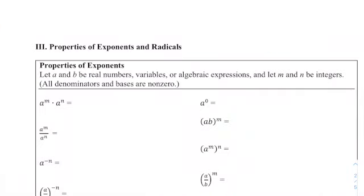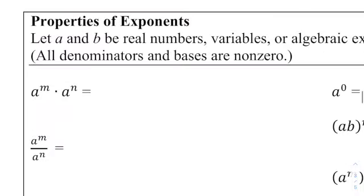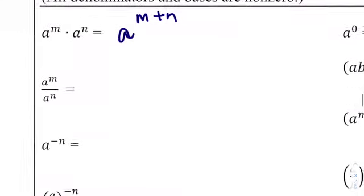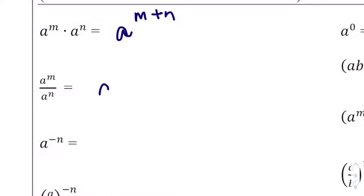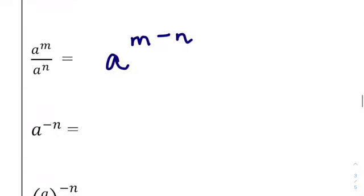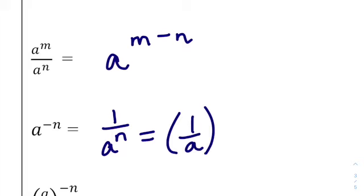Let's switch gears and review properties of exponents and radicals — these are in appendix section A.2 of your textbook. When combining or simplifying terms with exponents, they need the same base. A to the M times A to the N equals A to the M plus N — you add the exponents. When dividing, it's A to the M minus N — you subtract the exponents. A to the negative N gives the reciprocal, written as 1 over A to the N.